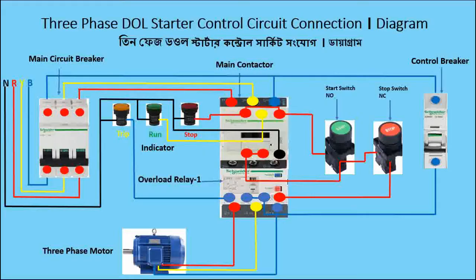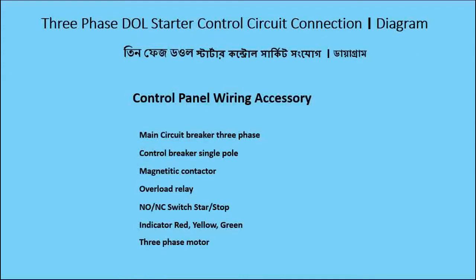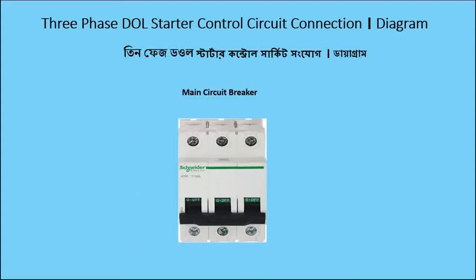Three-phase DOL starter control — DOL and mini direct online motor — how to control and how to make connections, I will explain everything. First I will show the control panel wiring accessories: there are a main circuit breaker, three-phase control breaker, single pole, magnetic contactor, overload relay, NO and NC switches, start/stop indicators in red, yellow, and green, and a three-phase motor.